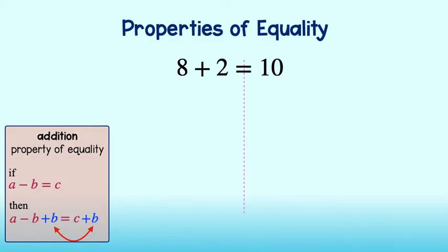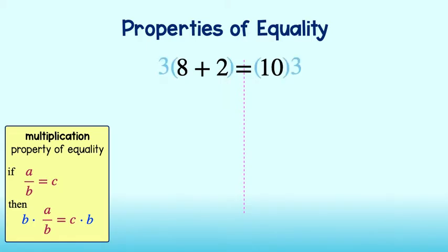The same goes for any property of equality. Let's multiply by 3 on both sides of the equation. Focusing on the left-hand side, 8 plus 2 times 3 is equal to 30. On the right-hand side, 10 times 3 is also equal to 30. Again, we have a true statement. We can manipulate this equation all day as long as we stick to these properties of equality.